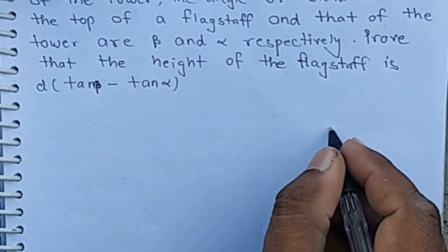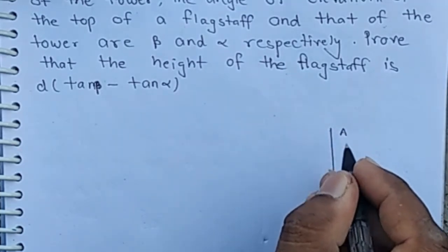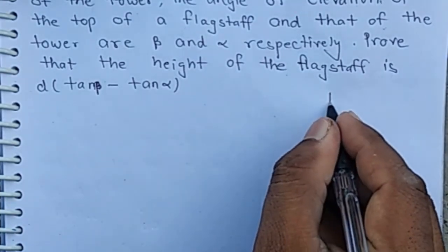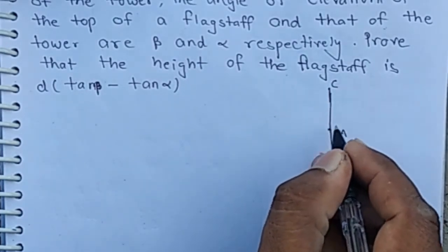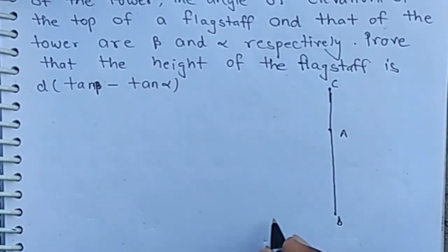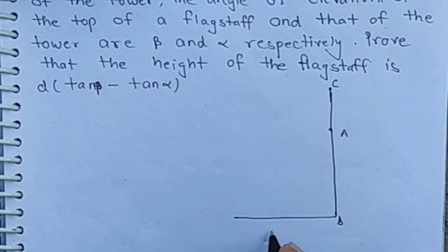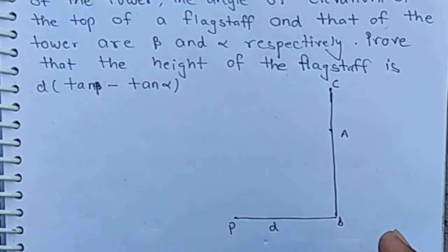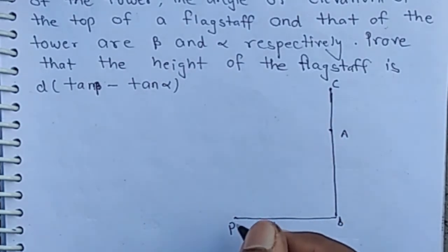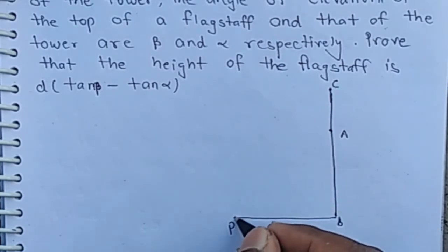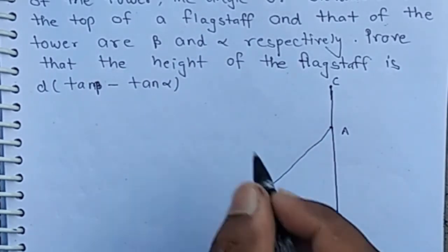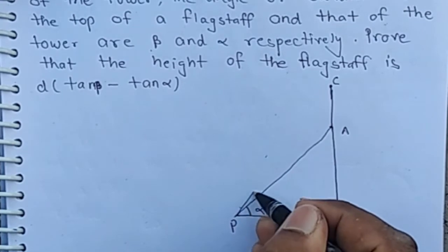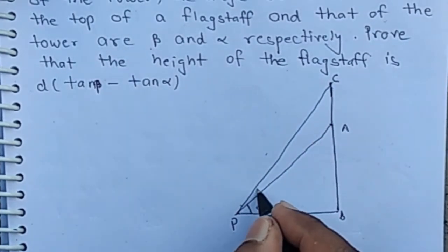Here, AB is the tower and AC is the flagstaff. Point P is at a distance D from the foot of the tower. The angle of elevation from P to the top of the tower is alpha, and the angle of elevation to the top of the flagstaff is beta.